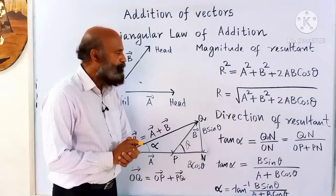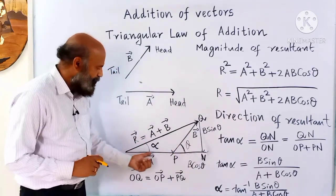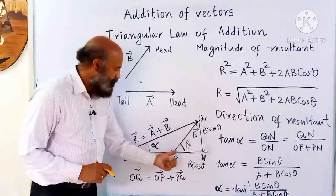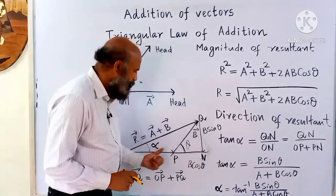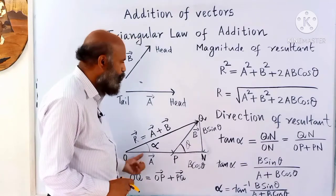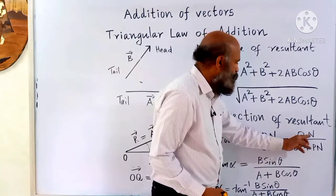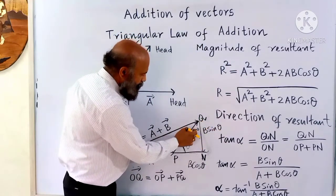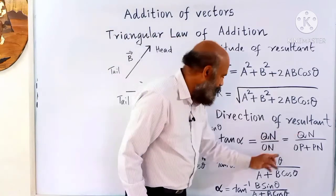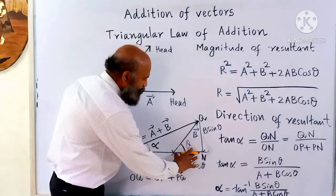The resultant makes an angle alpha with the direction of vector a. If we can find alpha, we can get the direction of the resultant. In this triangle, tan alpha equals QN divided by ON. The opposite side is QN and the adjacent side is ON, which equals OP plus PN. QN equals b sin theta and OP equals a (magnitude of vector a), and PN equals b cos theta.